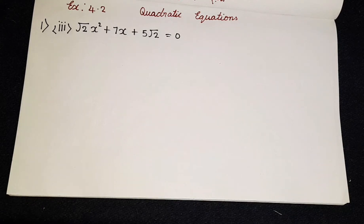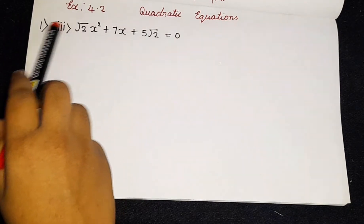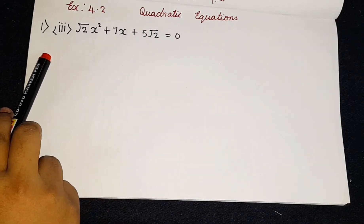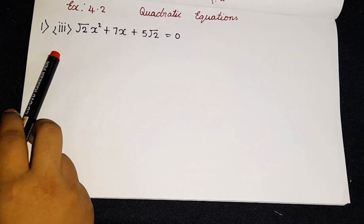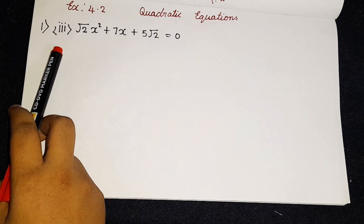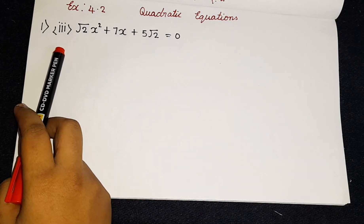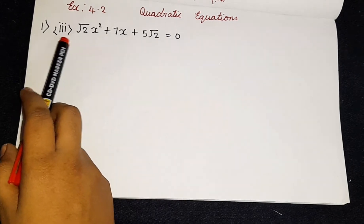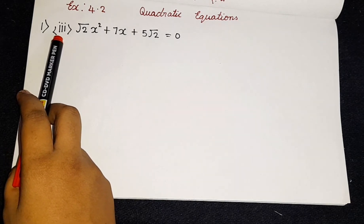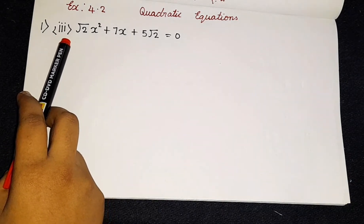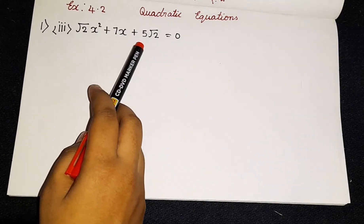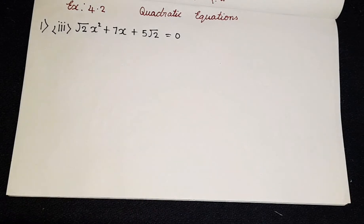Today we are going to be learning Exercise 4.2, first question, third subdivision. We didn't just write the question — that is the first question. We are going to be using the factorization method to solve it. So the third subdivision is: root 2 x squared plus 7x plus 5 root 2 is equal to 0. This is the third subdivision.